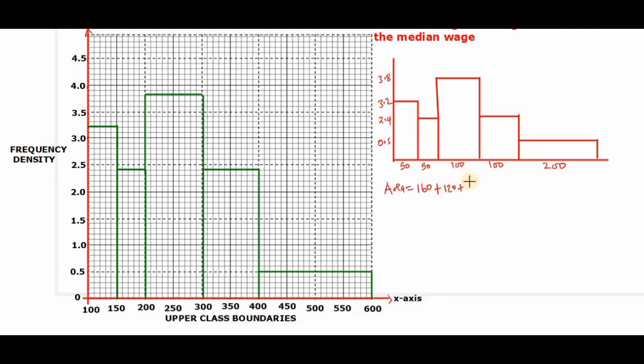The third bar is 3.8 by 100, that is 380. The fourth one is 100 by 2.4, that is 240. And then the last one is 0.5 by 200, that is 100.